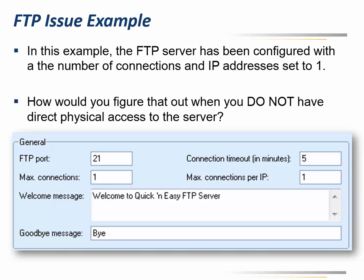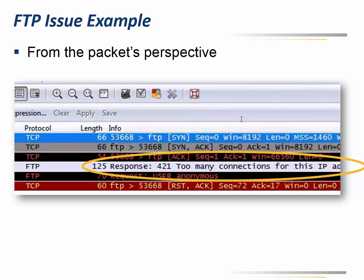The big thing I want to stress here is: always ask yourself the question — how could you figure this out when you don't have direct physical access to the server, or the server doesn't give you an error message, or the application is giving a vague error message? From the packets perspective, we can see it says 'too many connections for this IP address.'